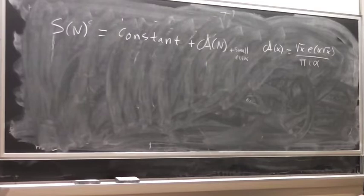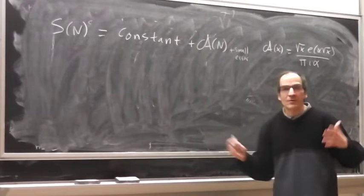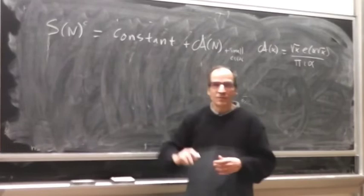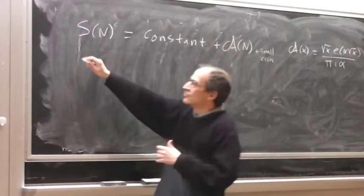We have this approximate identity, which is true both from the theoretical point of view and numerically. Meaning: if you take alpha equal to one, as was my case in my notes, and put one million here, and then reduce the value of the constant and put two million, you can check that this is true, with a very small error. I am not cheating.